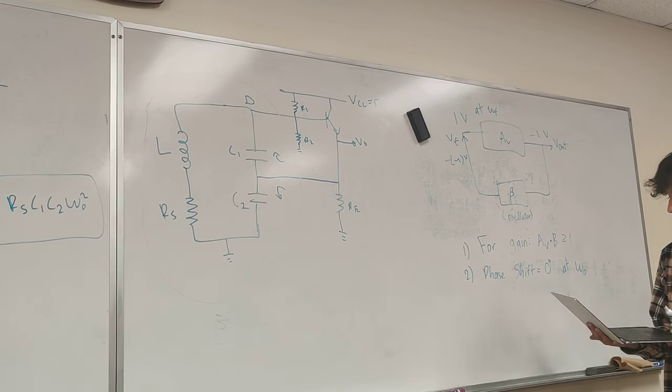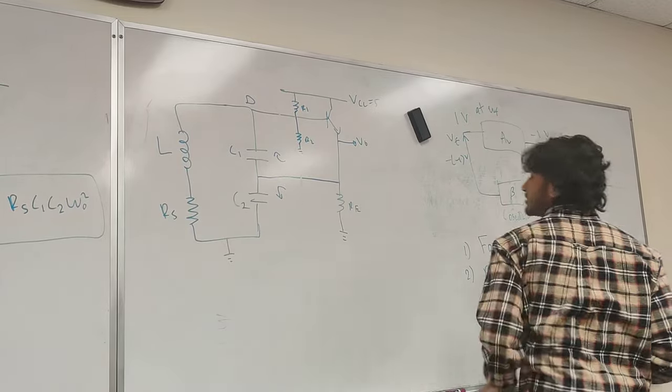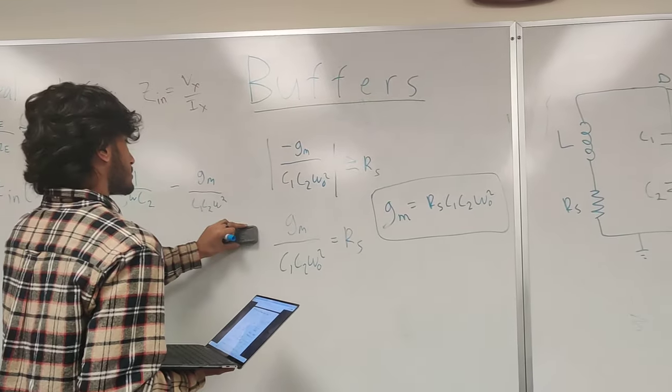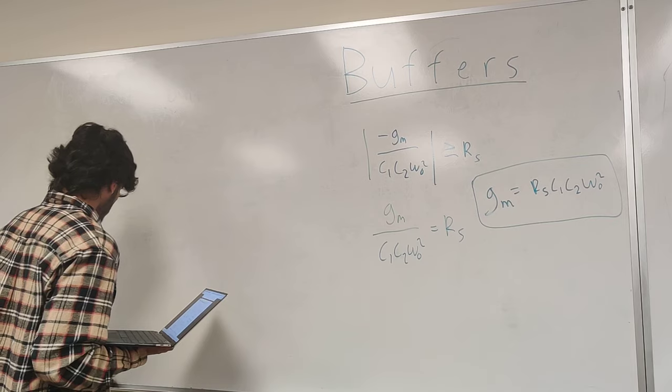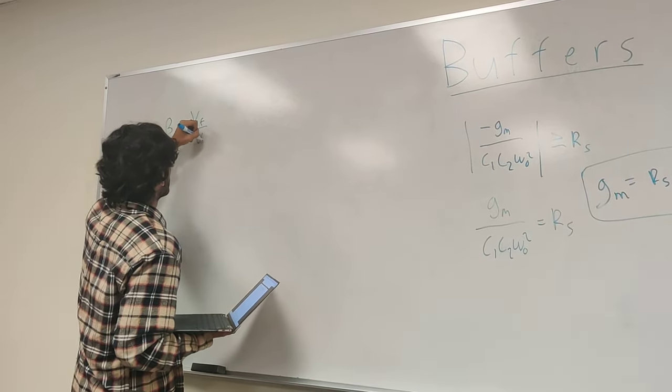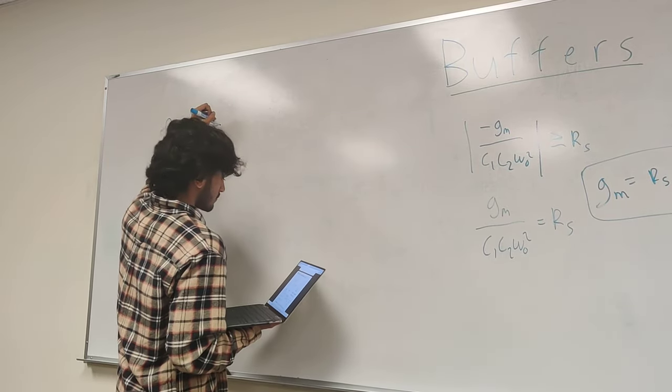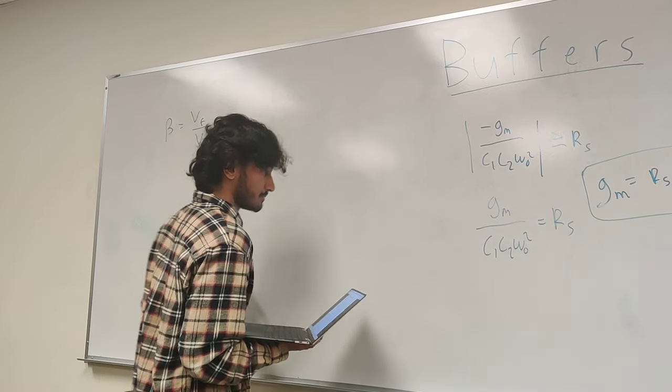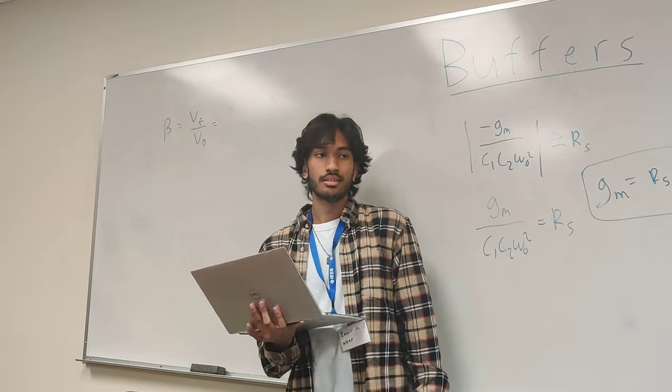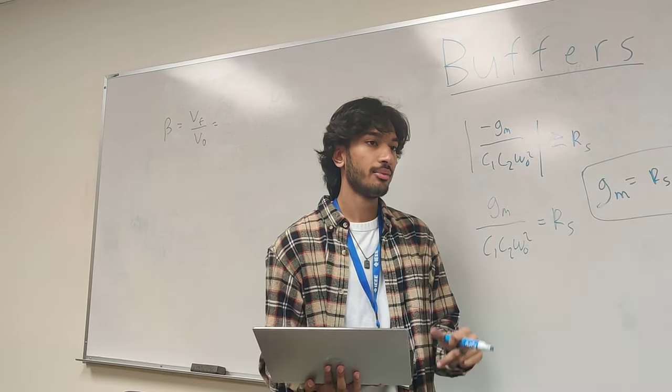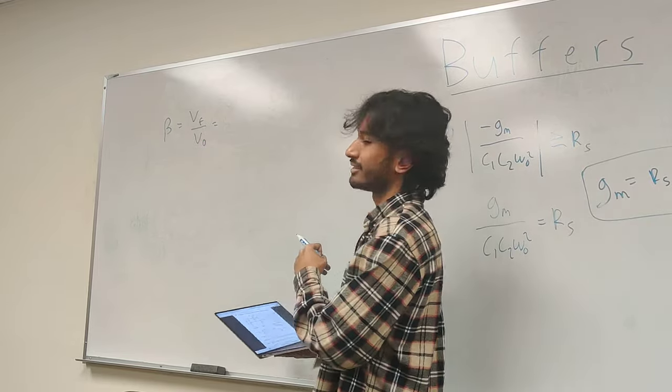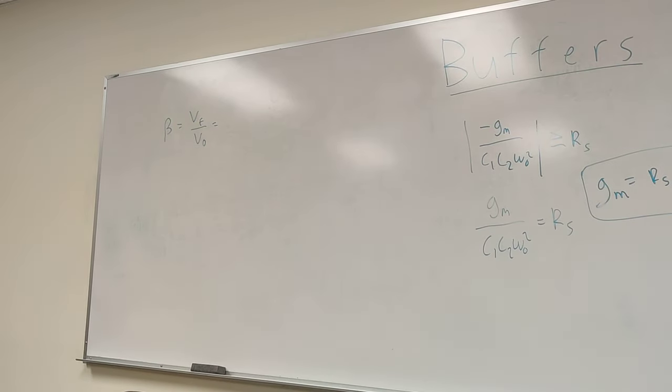So back to the more math side of things. First things first, this makes sense, right? Beta is VF over V naught, the reason being VF is the output of the oscillator, the beta network, and V out is the input. So beta is, if you think of it like a gain, right? Beta, your gain is going to be equal to your output over your input. And for clarity's sake, make this V naught as well. So you see how we get beta is VF over V naught. It's a standard 141 approach.